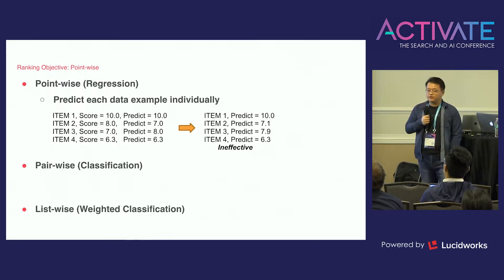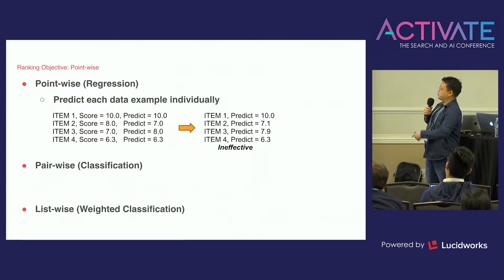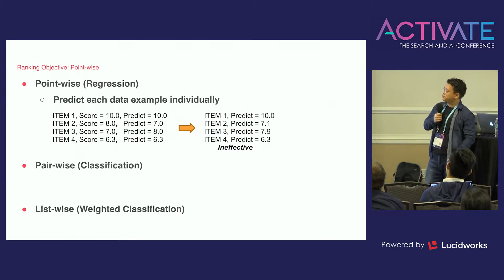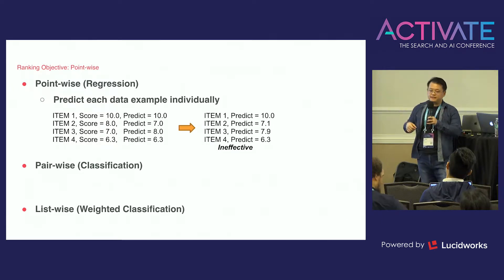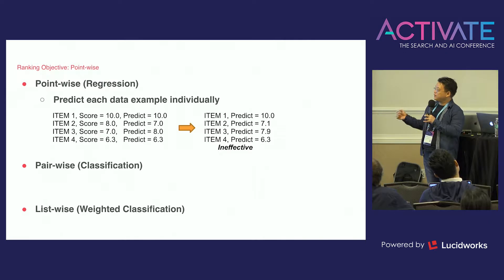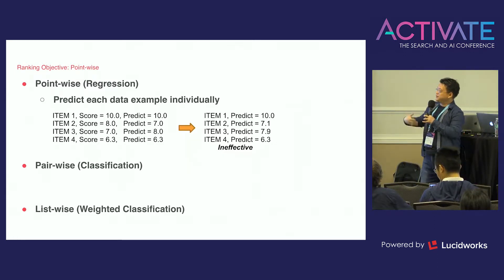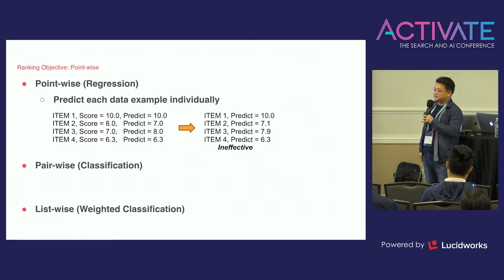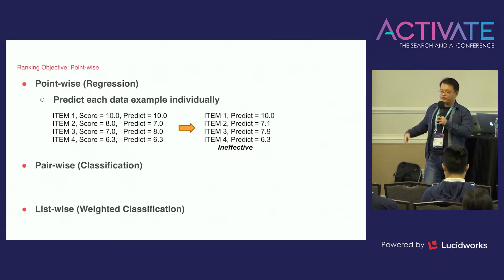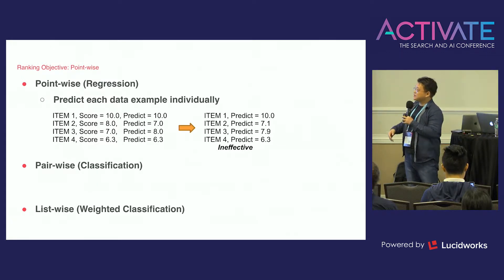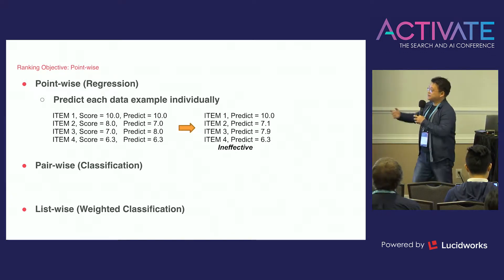For the pointwise method, it's very similar to a regression problem. When we try to predict a score for items — say items one through four — the score represents the ground truth label and the model predicts a value independently for each item. In a pointwise setting, the model learns each item individually and the prediction for one item is independent from others in the list. The main disadvantage is that the model learning is very ineffective, because the outcome of search ranking is the ranked list.